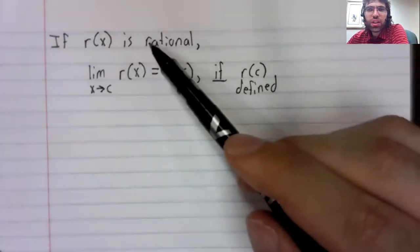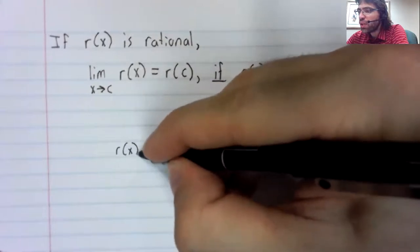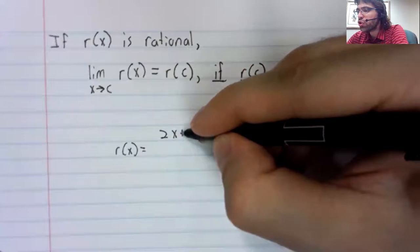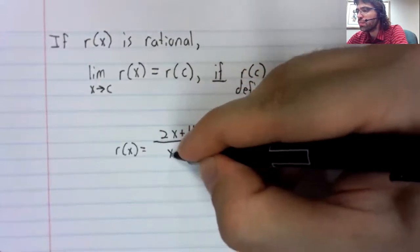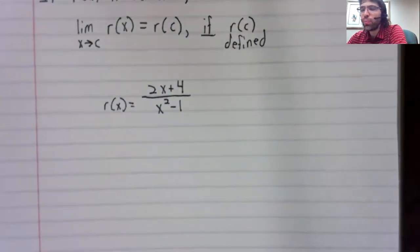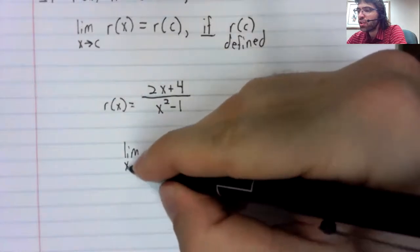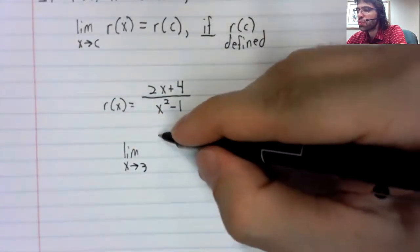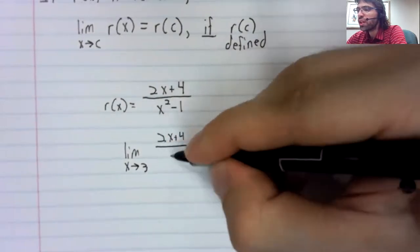Where this comes from - let's say we have a rational function, and we want to take its limit, say the limit as x approaches 3 of this.